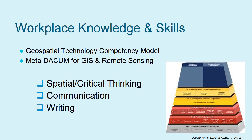The Geospatial Technology Competency Model and the Metacurriculum for GIS and Remote Sensing identify abilities to think spatially, communicate, and write as specific workplace skills needed for GIS and Remote Sensing. If you described the locations of features in the previous slide's image, you were thinking and communicating spatially.